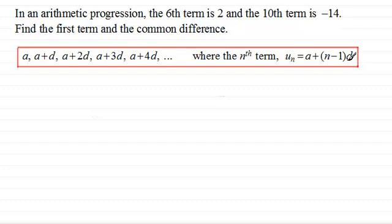So we can apply this formula here in this kind of question. We're told that the 6th term is 2, so we're basically saying that we're given that the 6th term, or you could write u_6, is equal to 2, and we can substitute this into this formula here.